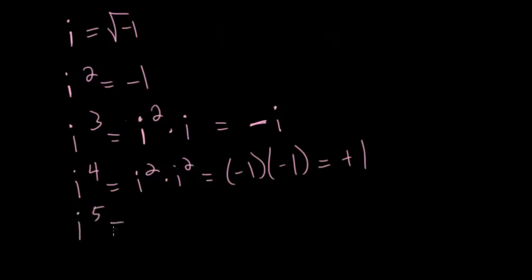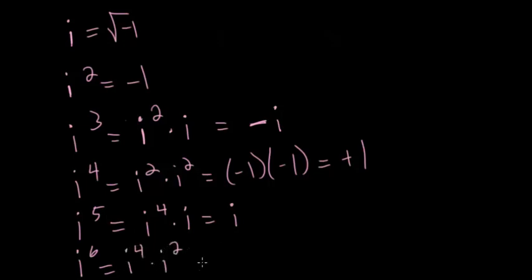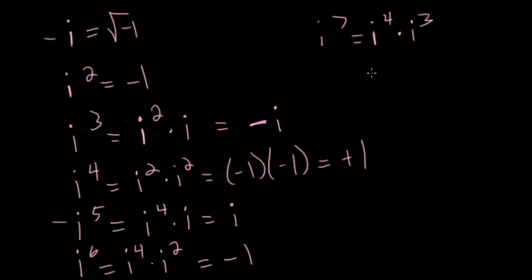Continuing the pattern: i to the fifth is i to the fourth times i, which is 1 times i, so just i. Every four powers of i, the cycle repeats. i to the sixth is i to the fourth times i squared, which is 1 times negative 1, so negative 1 — the same as i squared. i to the seventh equals i to the fourth times i cubed, which is 1 times minus i, so minus i. And i to the eighth is i to the fourth times i to the fourth, which is 1 times 1, or just 1, completing the cycle.